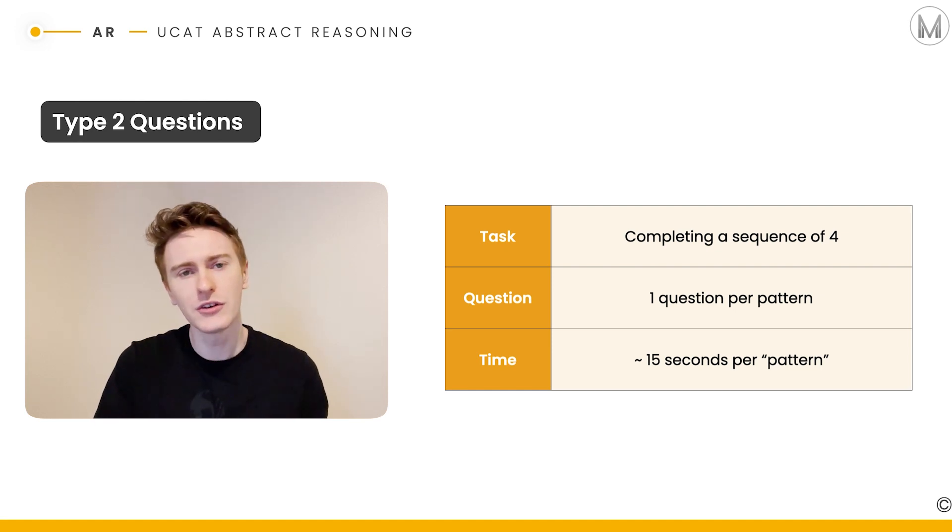That means that they can be more time pressured, but often they're easier questions. Because there's a sequence, because you can follow one shape to another, you can often see that there's a rotation at play, there's a movement or maybe a color inversion. They're quite easy to spot the pattern. So that's why they're a shorter amount of time per question.